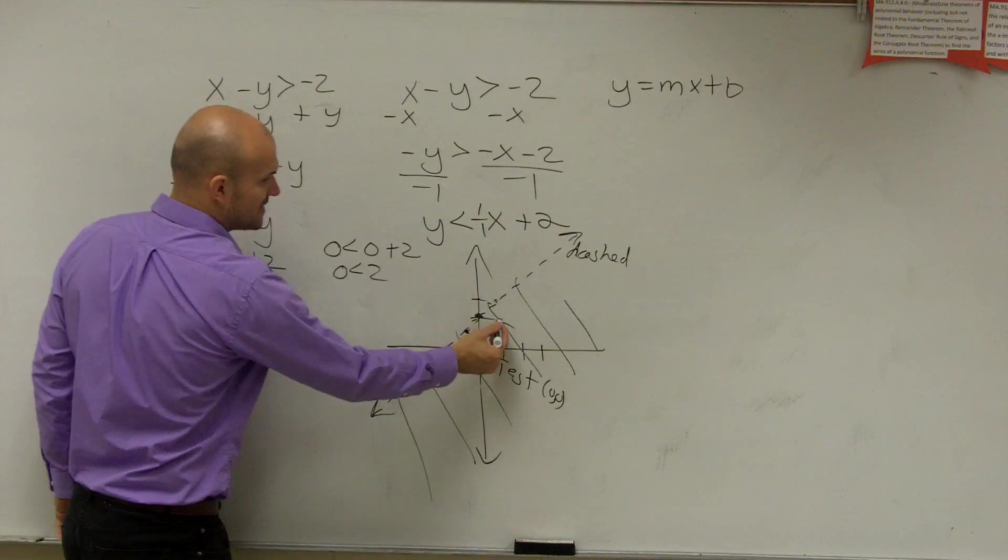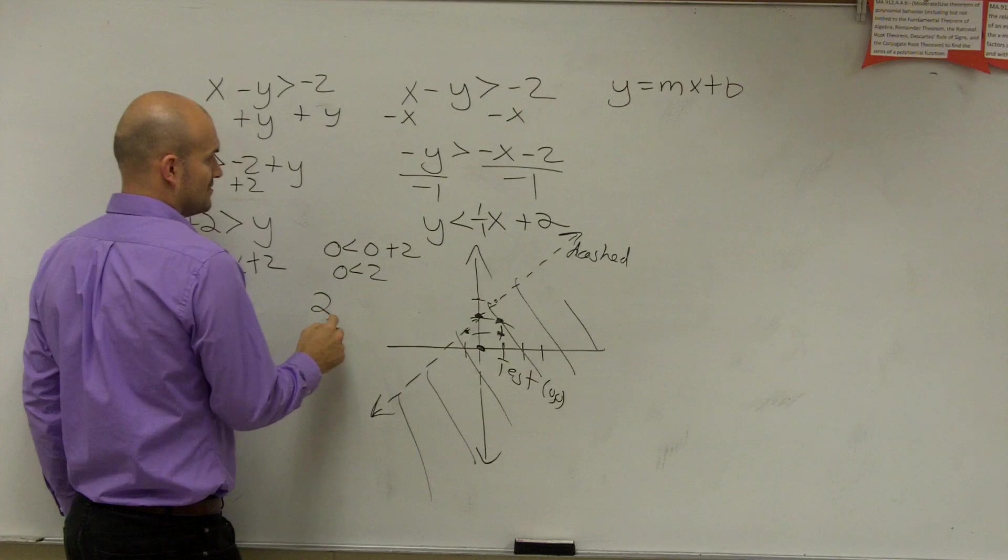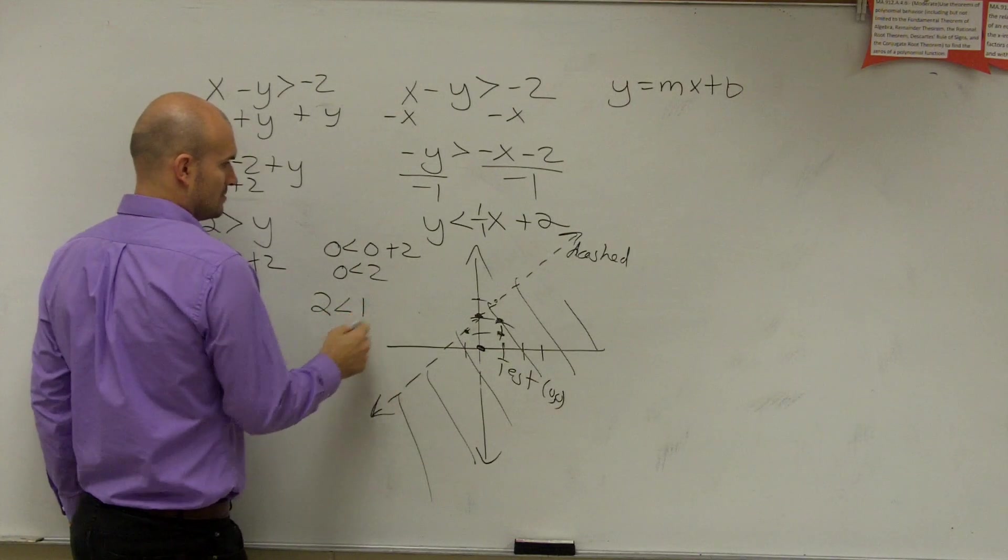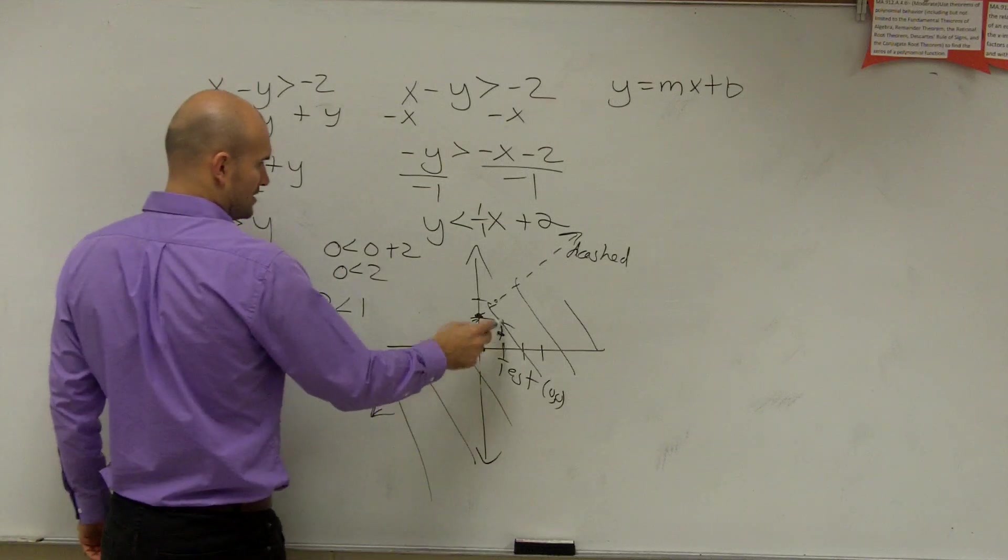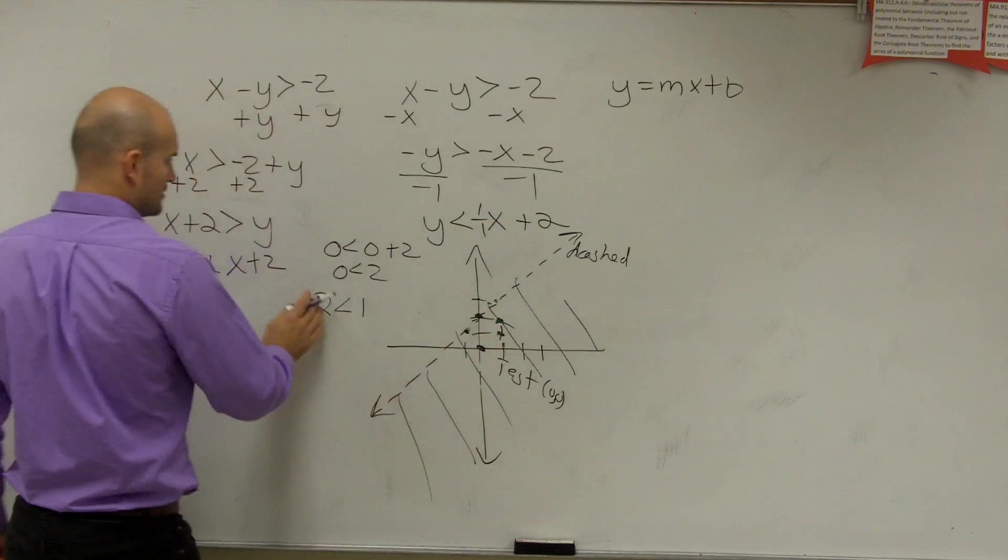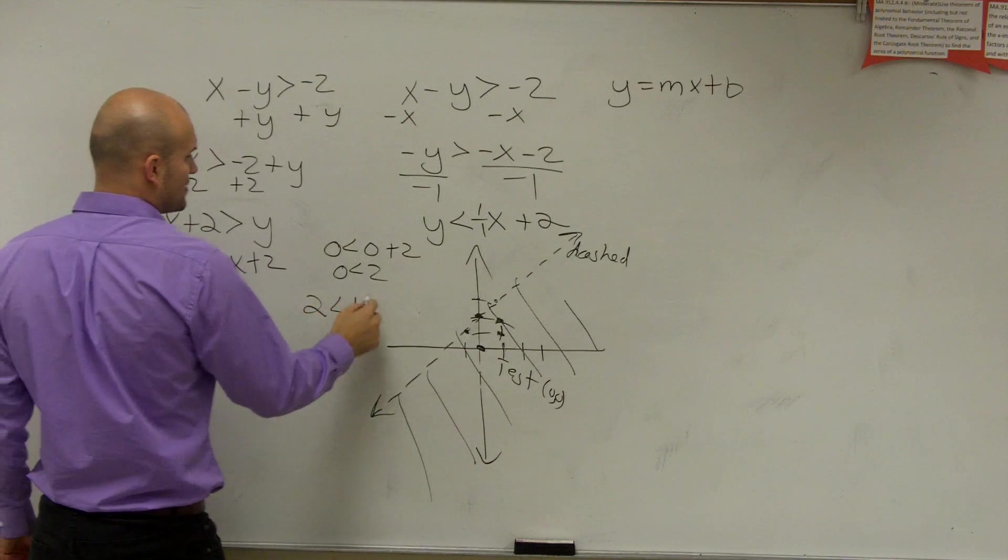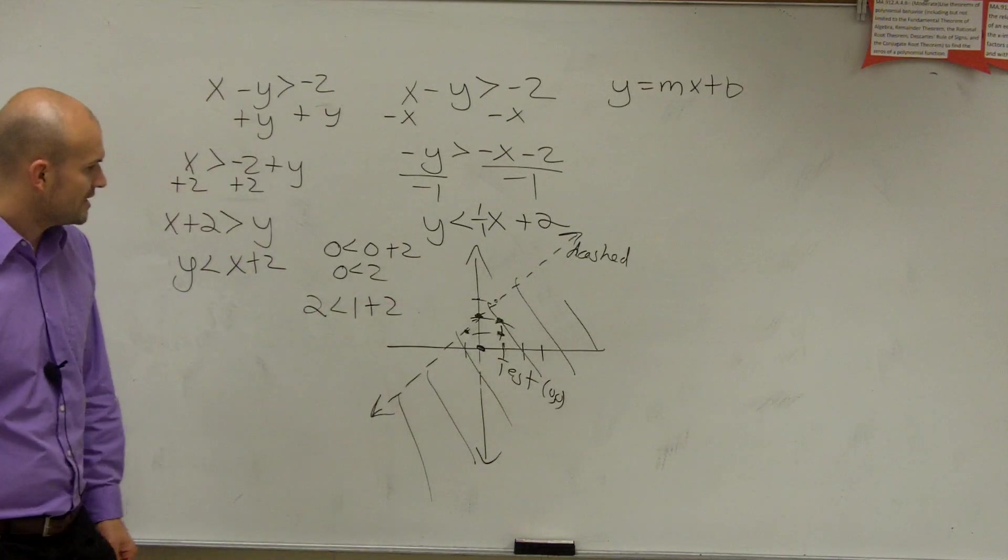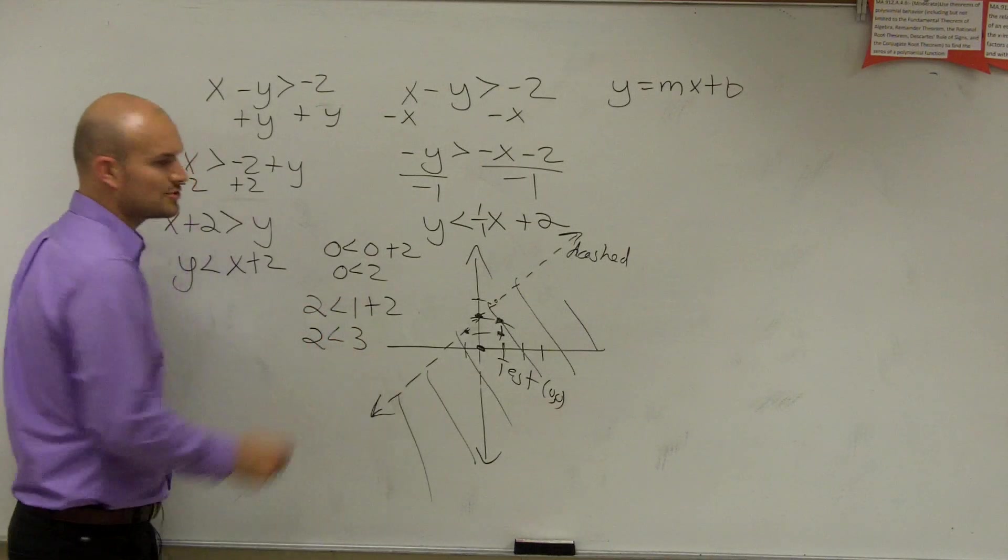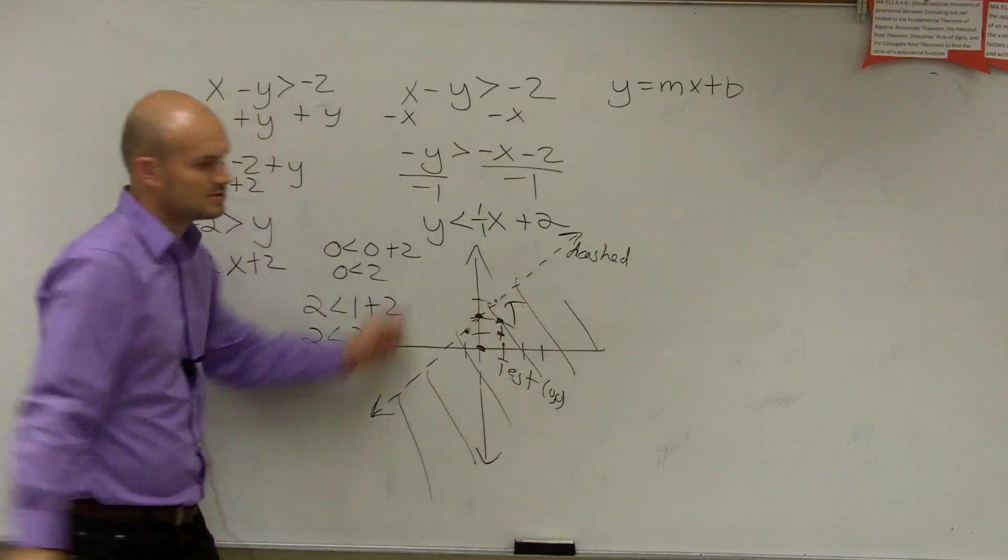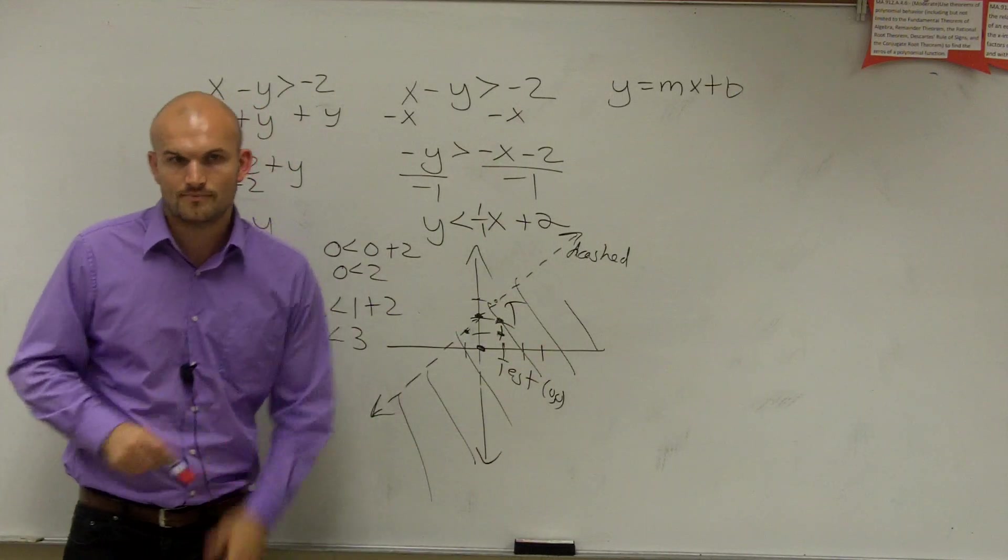All right. 1, 2. 1, 2 is right there, right? So 2 is your y is less than 1 plus 2. So you get 3. So 2 is less than 3. Is that true or false? So that's true. So you shade down below. OK? Make sense? Cool? All right.